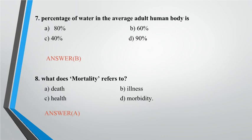Question 8: What does mortality refer to? A. Death, B. Illness, C. Health, D. Morbidity. Answer: A.